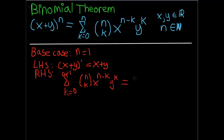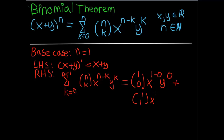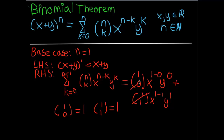So this is going to be: for k equals 0, we get 1 choose 0, x to the 1 minus 0, y to the 0; plus, for k equals 1, we get 1 choose 1, x to the 1 minus 1, and y to the 1. Recall that 1 choose 0 is equal to 1 and 1 choose 1 is also equal to 1, so these two factors are just 1.